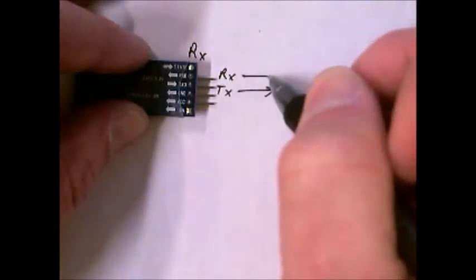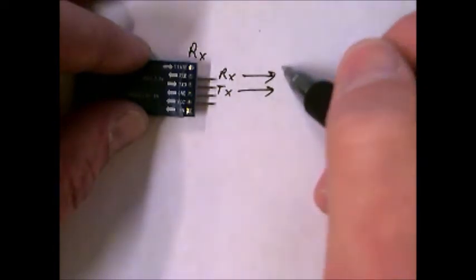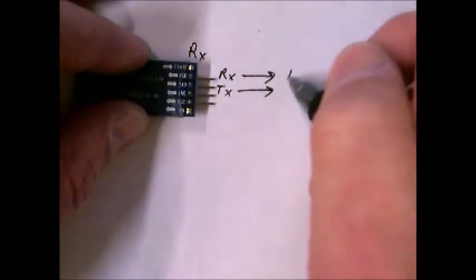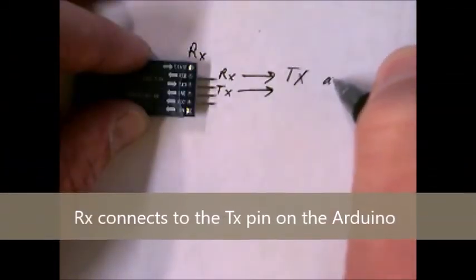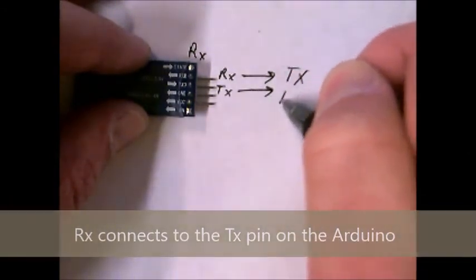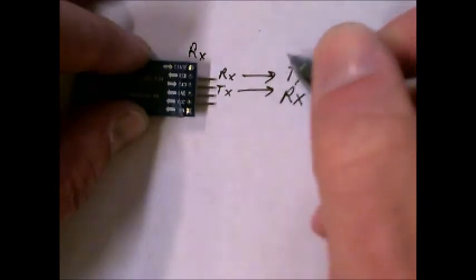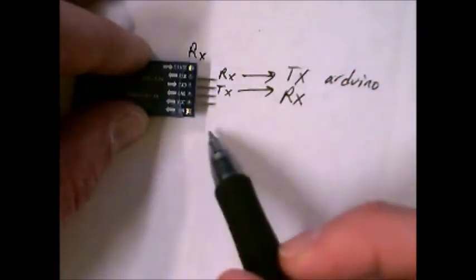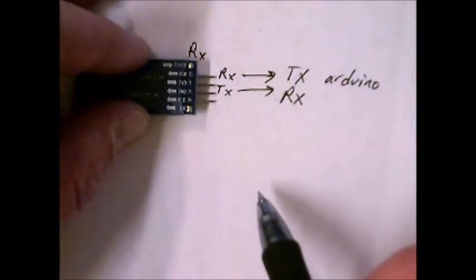And then this one, again, I want to make sure this is really clear. RX goes to the TX of the Arduino, and then TX goes to the RX of the Arduino. That's how you connect these two together. Just so that's clear.